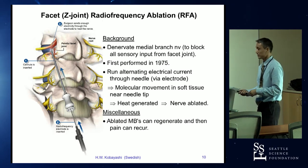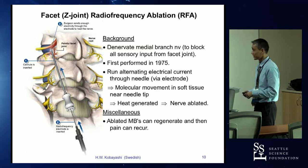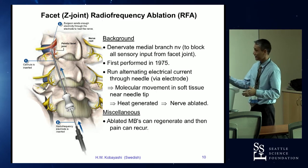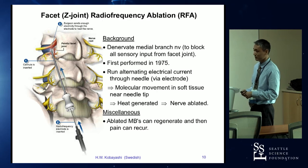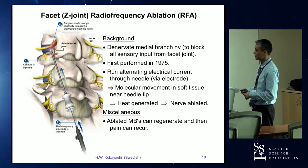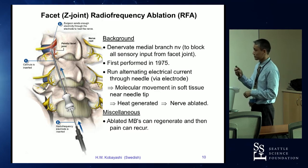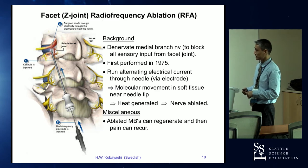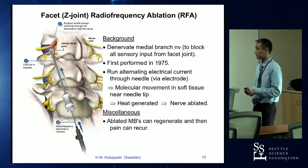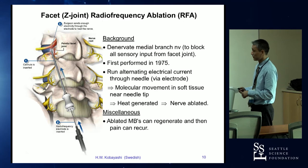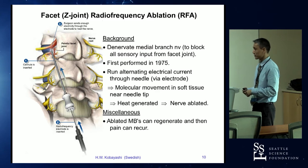Dr. Dipinto talked about the physics of RFA, so I won't go too much into that. It's wrong to say you're denervating the nerve — rather, you're coagulating the protein structures of the nerve. First performed in 1975, you run electrical current through the needle, causing molecular movement in the adjacent soft tissue, which generates heat and causes damage to the nerve. However, the ablated medial branch nerves can repair themselves and the pain can recur.